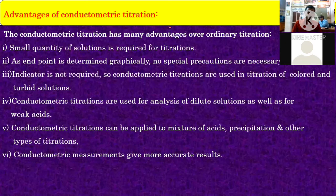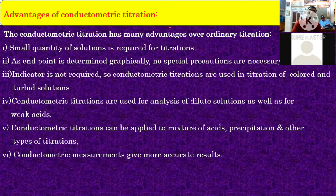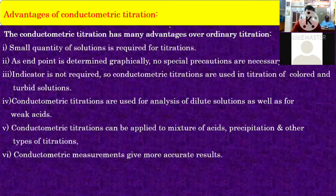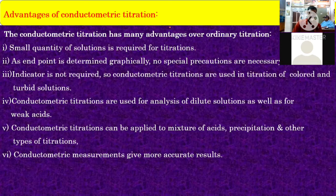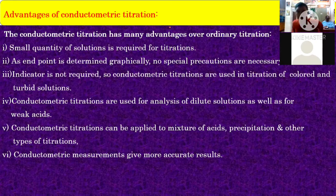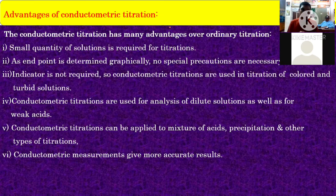Conductometric titration is a good method for determination of conductance of any electrolytic solution. Conductometric titration has many advantages over ordinary titration. First: a small quantity of solution is required. Second: the endpoint is determined graphically, so no special precautions are necessary. In volumetric titration, certain precautions are necessary to avoid manual and instrumental errors. Here, no special precautions are needed because the endpoint is determined graphically by the conductivity meter.